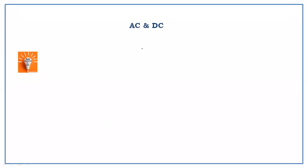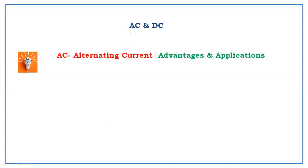Hello everyone, today we are going to discuss about what is AC and DC. AC means alternating current and DC means direct current. In this lecture, we are going to discuss about what is alternating current, what are the advantages of alternating current, and what are the applications of alternating current.